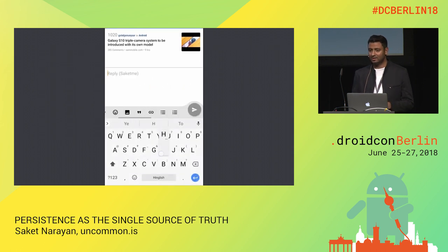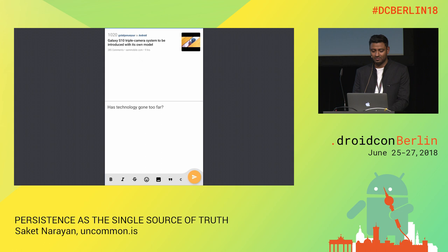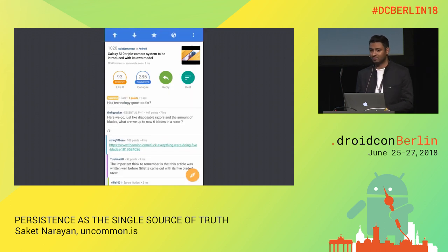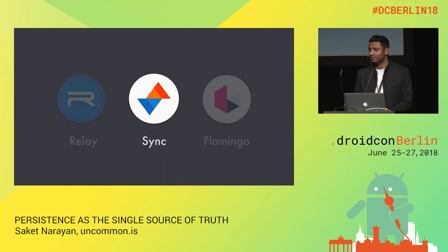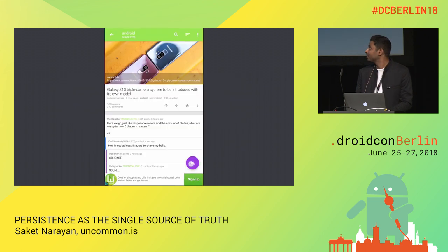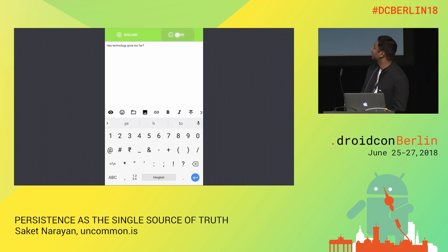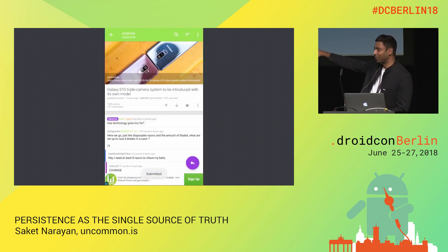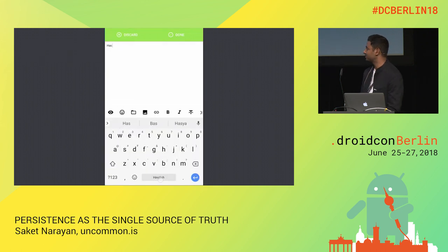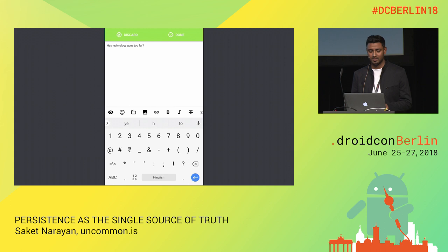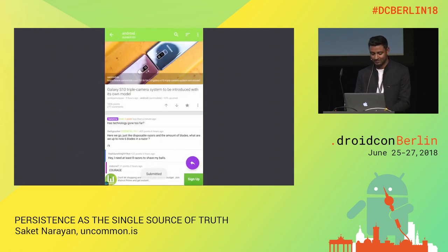So if you happen to accidentally trigger an orientation change — say, you're lying on your bed watching cat videos — the dialog is gone. Another very popular app, Sync for Reddit, is slightly better than Relay. When you post a reply in Sync, it does not show any blocking progress dialog. There's a toast message at the bottom — Sync only shows toast messages for communicating progress, but it does not block you from using the application while the call is ongoing. That's slightly better and acceptable, but not the best possible way.